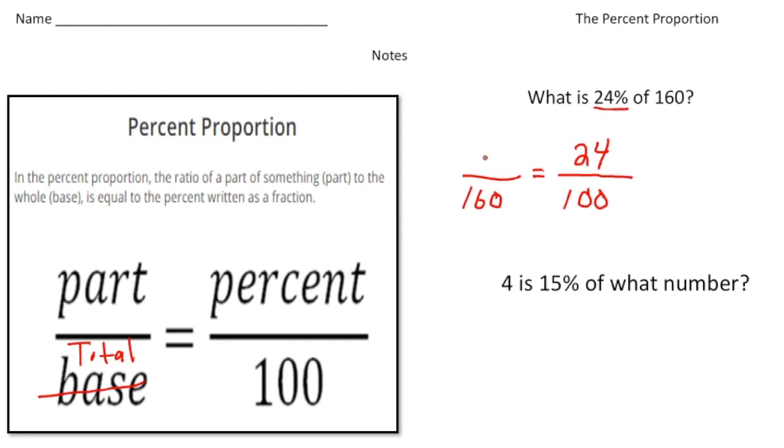And this is going to represent the unknown, or the part. Now that we have our proportion set up, we can use what we know about proportions to solve for n. We know that the cross products are equal, right? So I know that n times 100 is going to be 100n, and that's going to equal 24 times 160, which is 3,840.